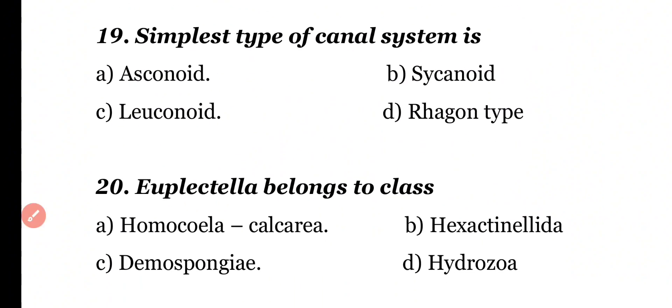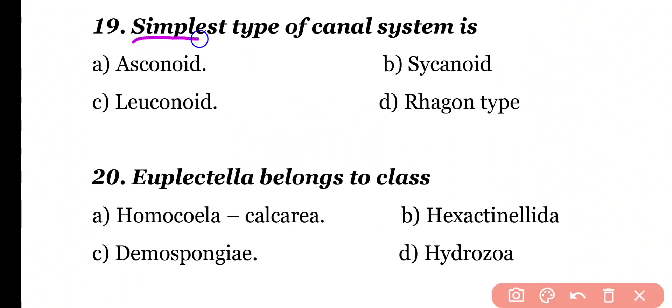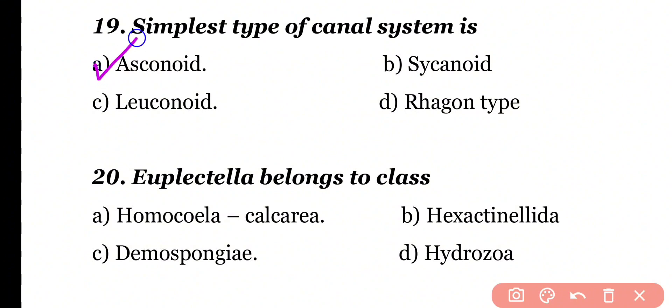Question number 19. The simplest type of canal system is: asconoid type, syconoid type, leuconoid type, or rhagon type. Correct answer is option A. The simplest type of canal system is the asconoid type, which is present in leucosolenia.